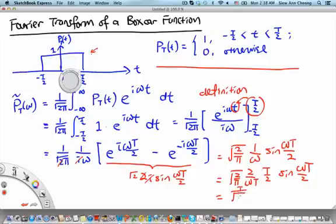Where sinc of x is equals to sin x divided by x. So this is the Fourier transform of the boxcar function and if we sketch it out, it will look something like this.